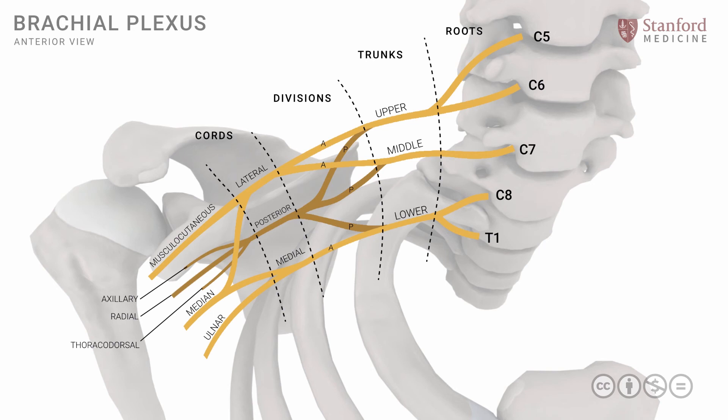There is one other branch coming directly from the roots — from the C5, C6, and C7 roots — known as the long thoracic nerve. So these are some of the key branches of the brachial plexus that have great clinical significance, coming from the various parts of the plexus as reviewed.